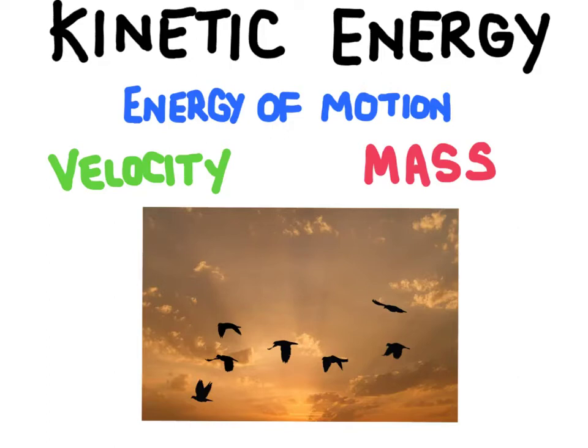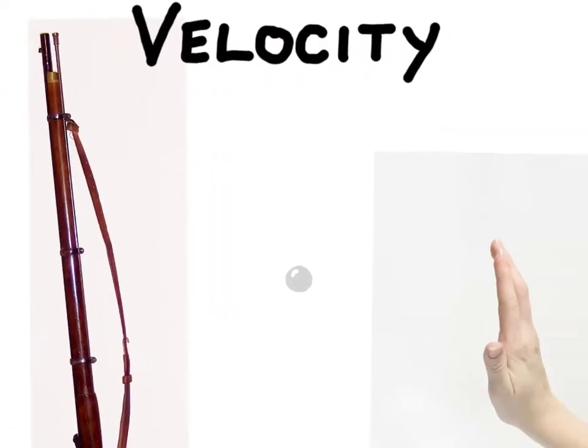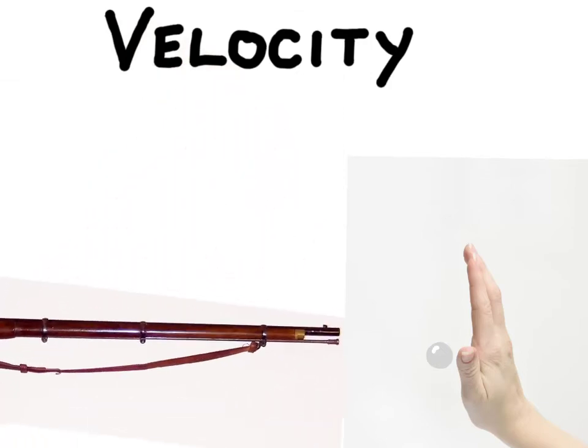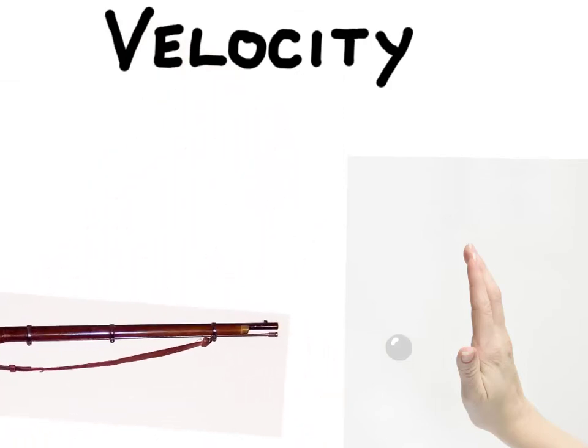Sometimes it's best to visualize this type of energy in terms of how difficult it would be for you to oppose the energy. Let's start with velocity. If someone were to toss you this small steel ball bearing, you could pretty easily stop it with your hand. You might even be able to catch it. Now if you could increase the velocity of that ball bearing by maybe shooting it out of a gun, it would be a really bad idea to try and stop that with your hand.